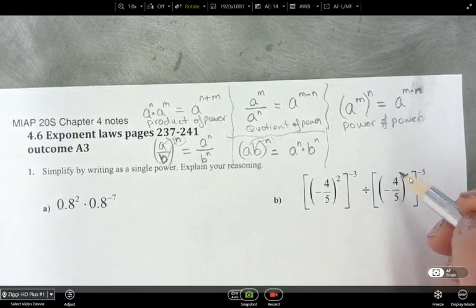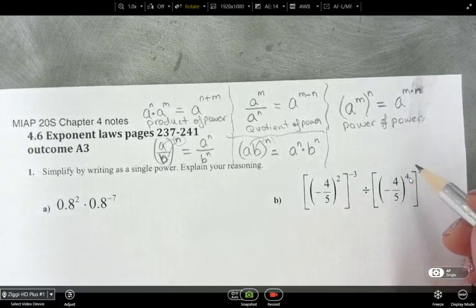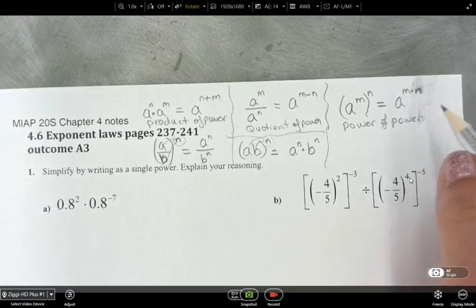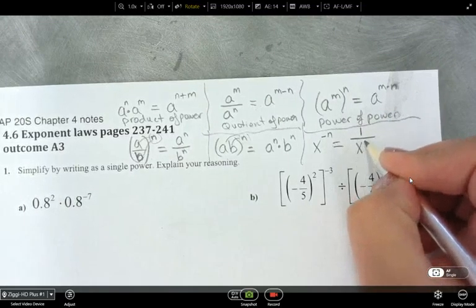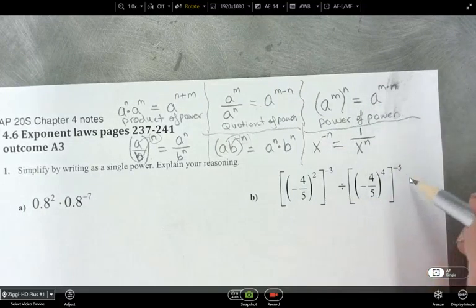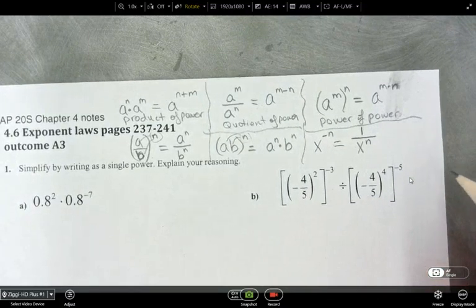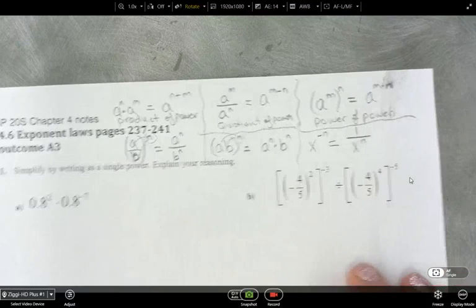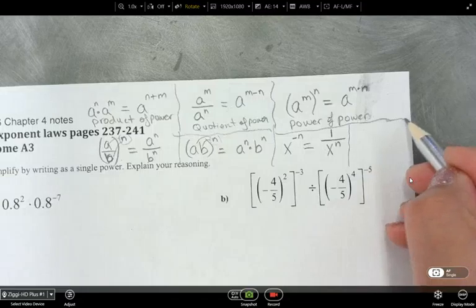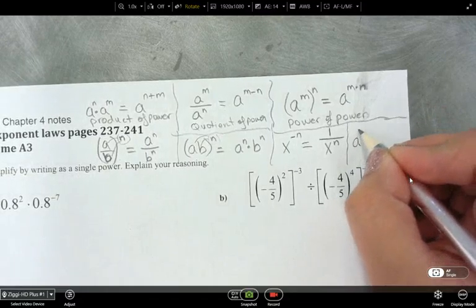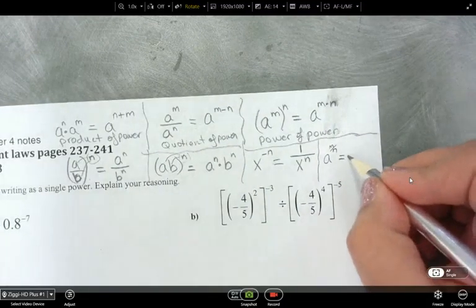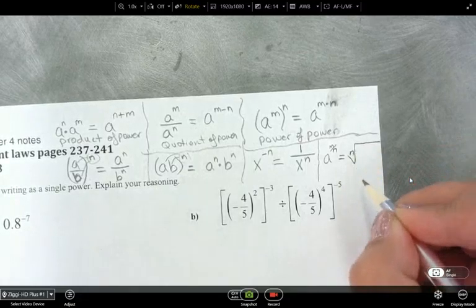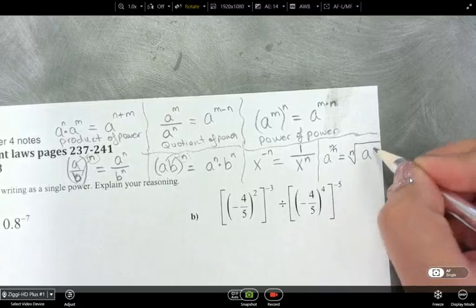Last lesson was the first time that we saw negative exponents. So if I have X to the power of negative N, how can I write that with a positive exponent? One over X to the power of N. And then there's one more — fractional exponents. If I have A to the power of M over N, what does that equal? The N tells me which root it goes to, and then I have A to the power of M.